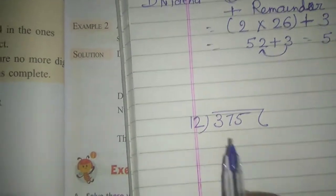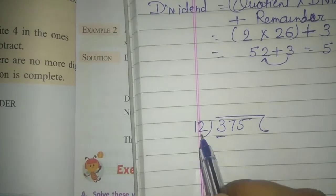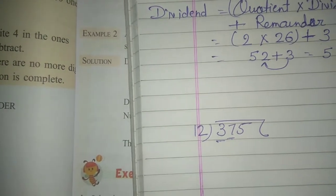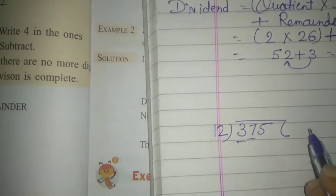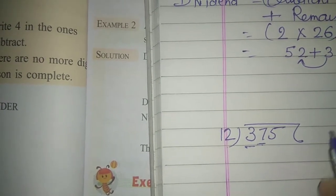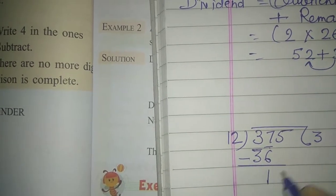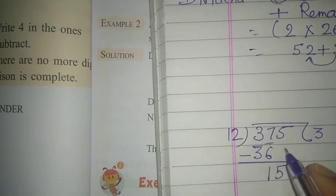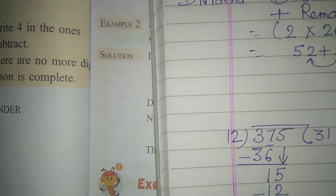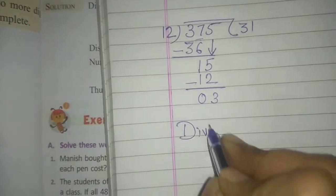Then second is 375 divided by 12. 3 is too small, not divisible. Then 37 divided by 12. 12 ones are 12, 12 twos are 24, 12 threes are 36, 12 fours are 48. We use 36, subtract to get 1.